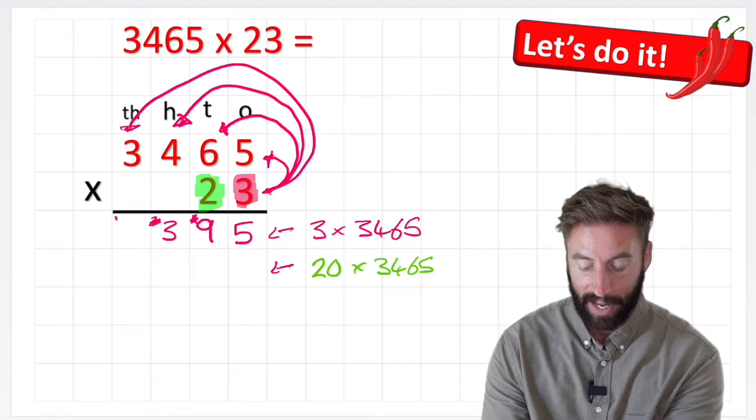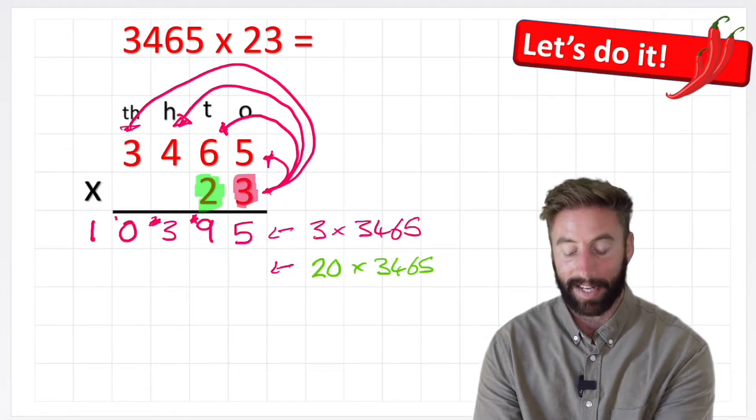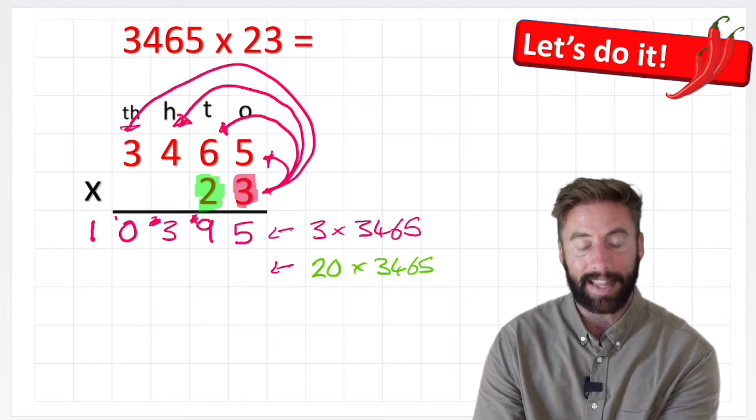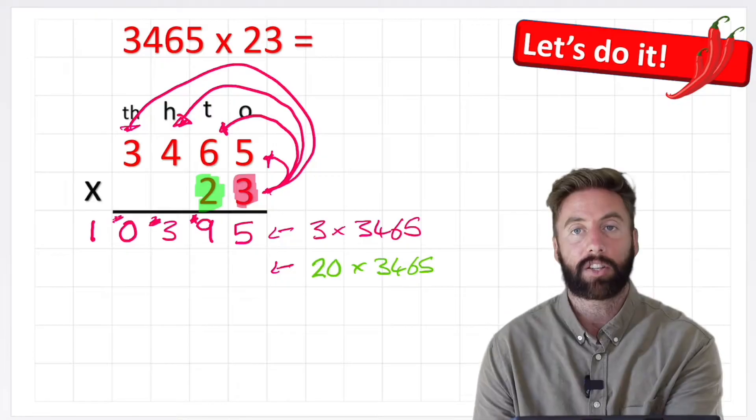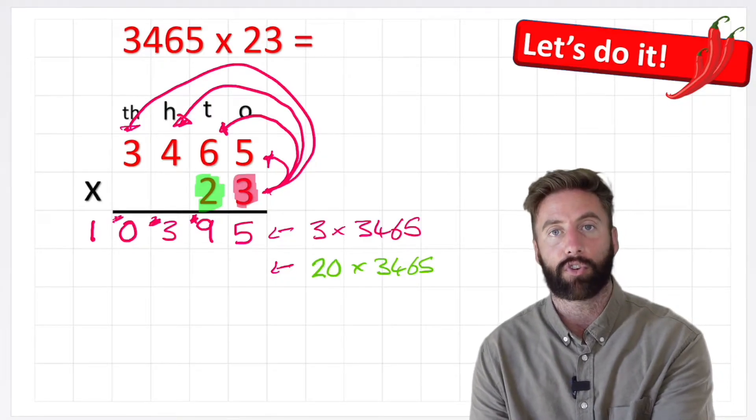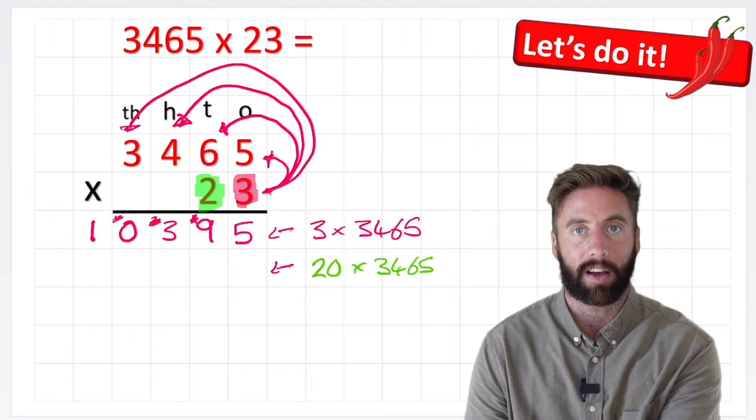Now lastly I can do 3 times 3 for my thousands column. And 3 times 3 is 9, plus the 1 is 10. Nowhere else to go, so I can just write my 10 into the next column, which would be my ten thousands. Get rid of that little one because we've used it. So the answer to 3 times 3465 is 10,395.